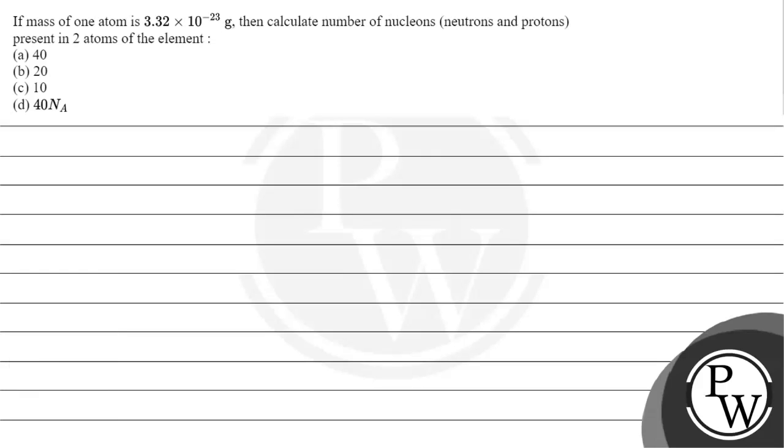Hello Bacho, let's read this question. The question says if mass of one atom is 3.32 × 10 to the power minus 23 grams, then calculate the number of nucleons, neutrons and protons present in two atoms of the element.